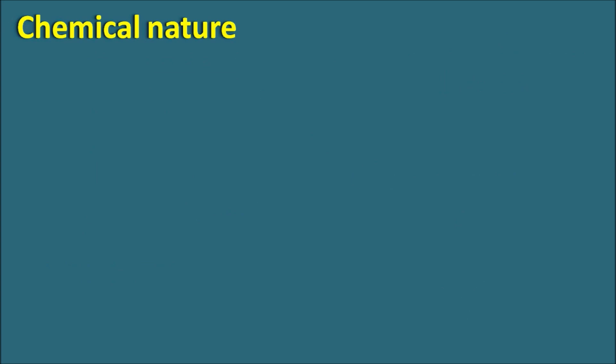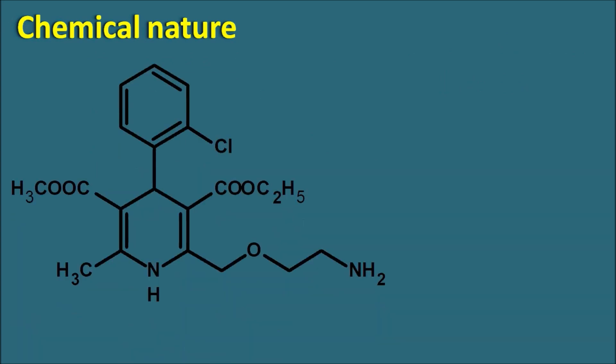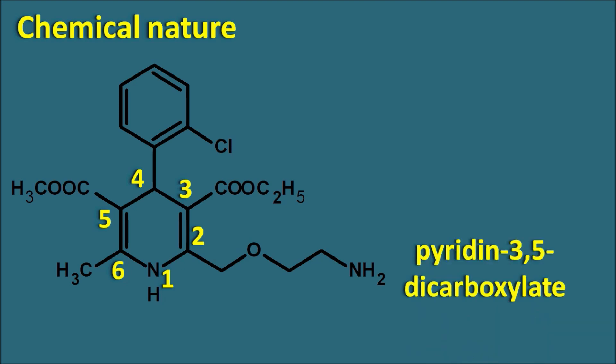Now let us see the chemical nature of amlodipine. Here we can find the heterocyclic ring system, that is the pyridine. Numbering from the nitrogen: 1, 2, 3, 4, 5, and 6. This ring is saturated at the first and fourth positions, so it is commonly known as 1,4-dihydropyridine. We can also find ester groups at the third and fifth positions, so the suffix of the name is pyridine-3,5-dicarboxylate — it is a diester.